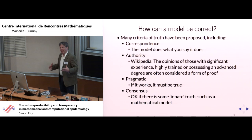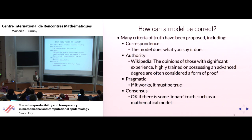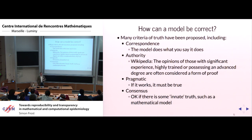How can a model actually be correct? There are many criteria of truth. One very simple one is correspondence — that the model does what I say it does: I have a paper, I describe the model, there aren't any typos, and I've given all of the initial conditions. Perhaps all too often, we have this idea of authority as truth — I'm an important mathematical modeler, I have a model, and you should trust me because I am an authority.